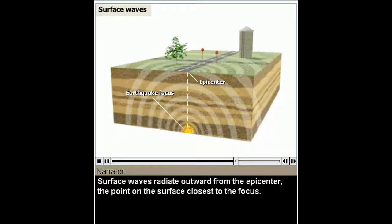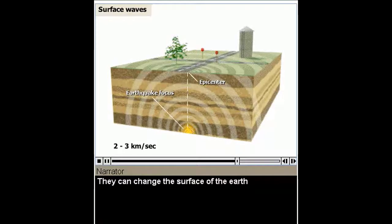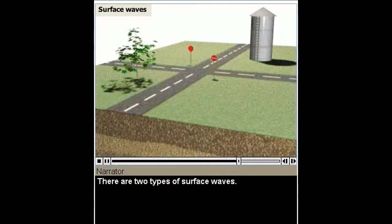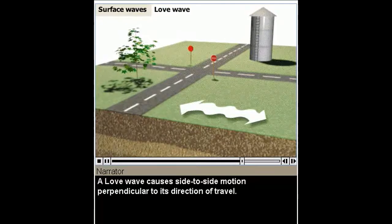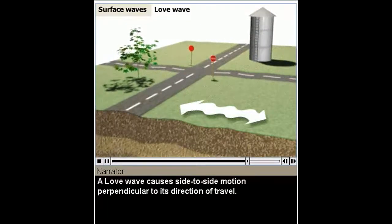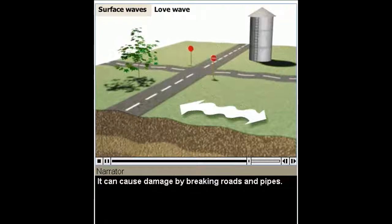Surface waves radiate outward from the epicenter, the point on the surface closest to the focus. Surface waves are slower than body waves, traveling at 2 to 3 kilometers per second. They can change the surface of the Earth, as well as damage homes, buildings, and other structures. There are two types of surface waves. A love wave causes side to side motion perpendicular to its direction of travel. It can cause damage by breaking roads and pipes.